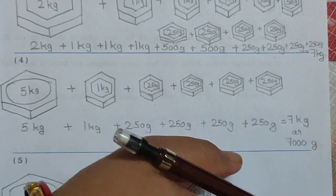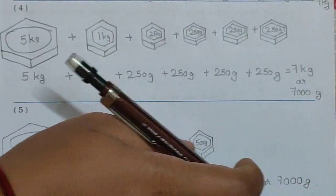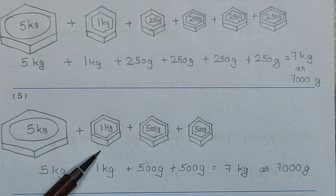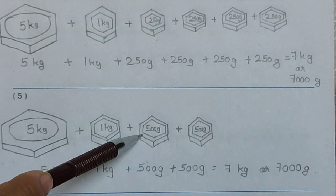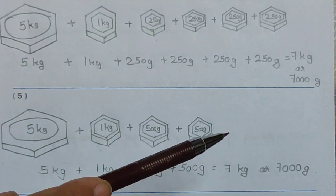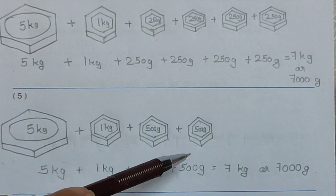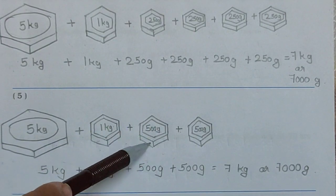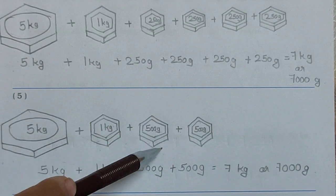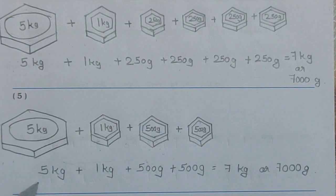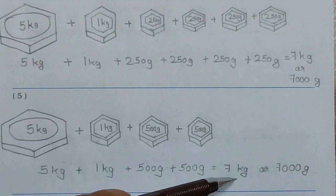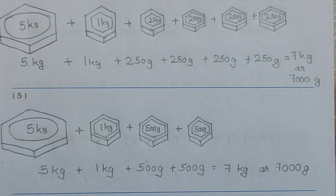Now see the fifth one. Again we use 5 kg plus 1 kg equals 6, plus 500 grams plus 500 grams — 2 times 500 grams means 1 kg. So: 5 kg plus 1 kg plus 1 kg plus 500 grams plus 500 grams is equal to 7 kg or 7000 grams.